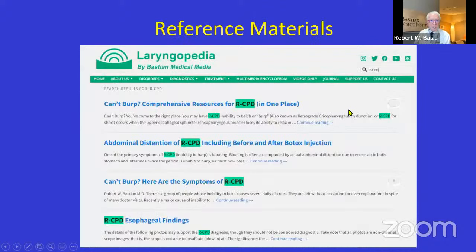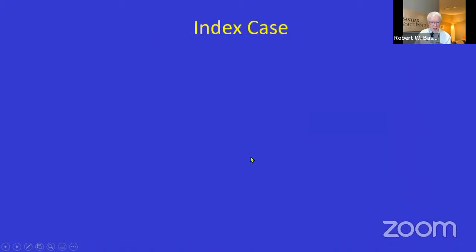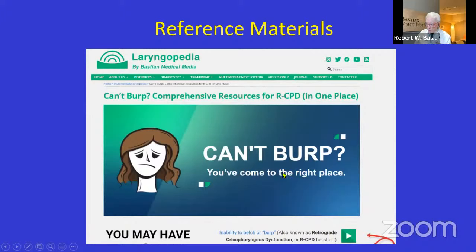If you need additional resources, Laryngopedia is my personal teaching website — a public service. On it there is a post called 'Can't Burp Comprehensive Resources.' If you type 'RCPD' into the search window, you will find it. Scroll down and you'll find my four articles — all open source by design, peer-reviewed, so you don't need a journal subscription. There are also links to my YouTube videos.